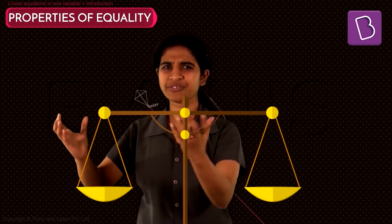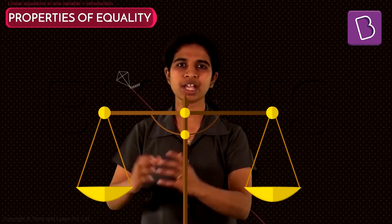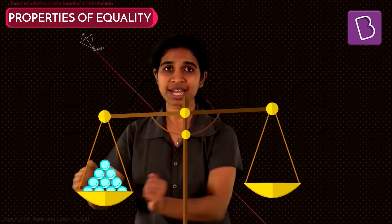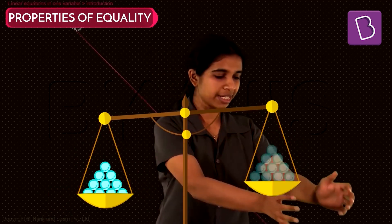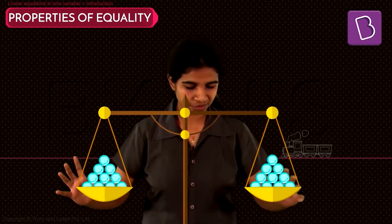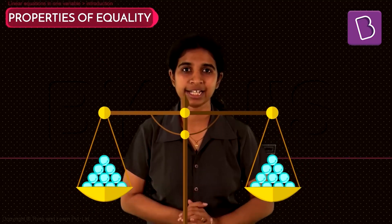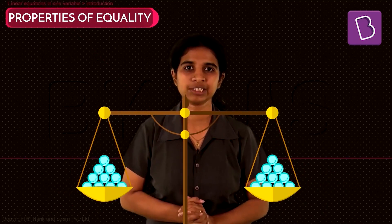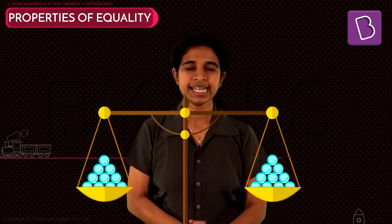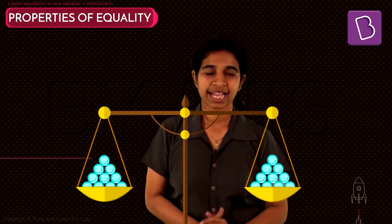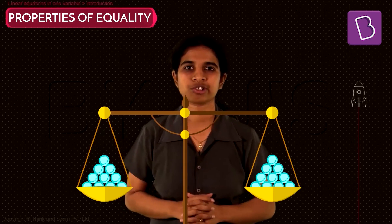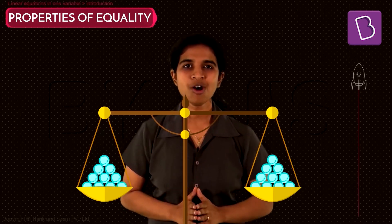Let's put some pebbles of equal weights — say all 1 kg pebbles — on this pan. We have 10 of them on this pan and 10 of them on this pan as well. Both sides are perfectly balanced.